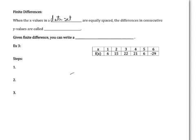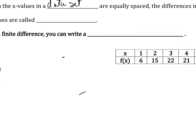which means they have the same difference between them. And so, this is the first qualifier for this. Alright, so when the x values in a data set are equally spaced, the differences in the consecutive y values are called finite differences.